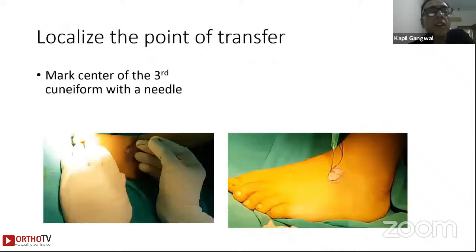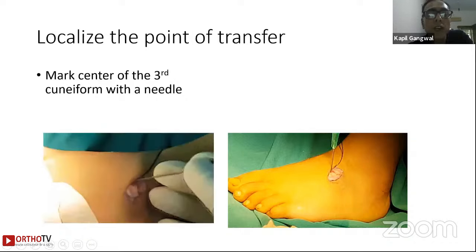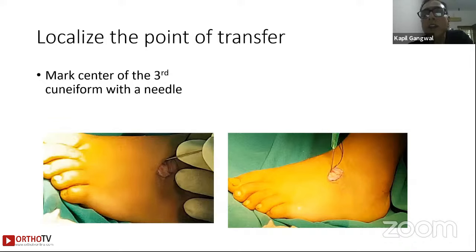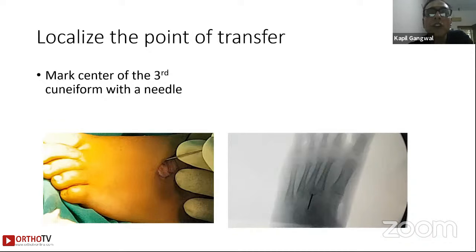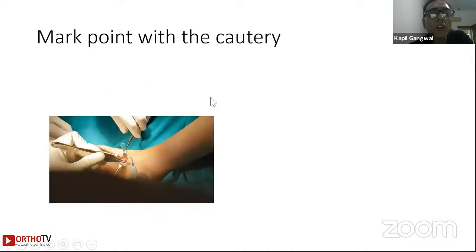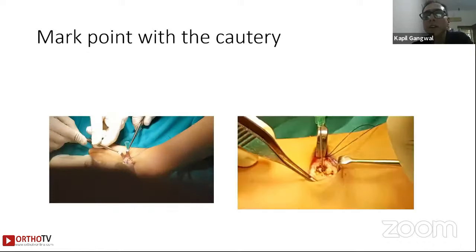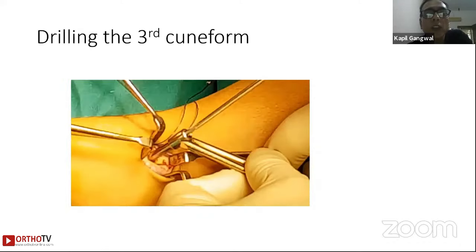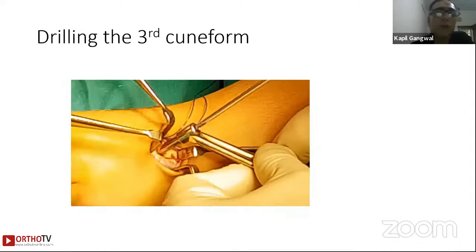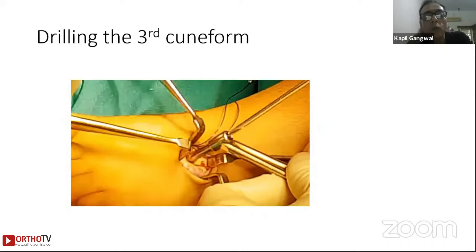Once the tendon is pulled out onto the lateral side, mark the point of transfer at the center of the third cuneiform using a needle. I use a hypodermic needle, poke it into the cuneiform, and confirm on the image intensifier that I'm in the right spot. Once confirmed, use a little cautery to mark the point, then take a drill and make a hole into the cuneiform, using sequential drilling up to about four millimeters so the tendon slides through smoothly.